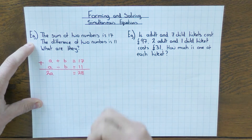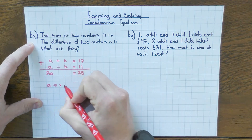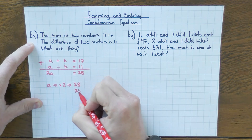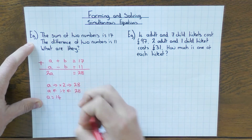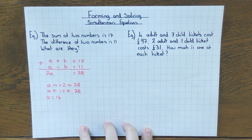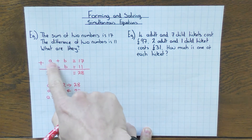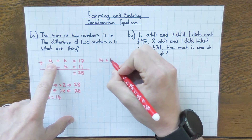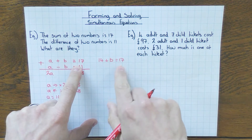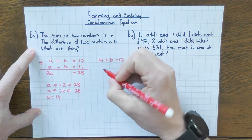This is where solving equations comes in handy — flowchart or balance method. I've got A, times it by 2, and I get 28. Go backwards: 28 divided by 2 gives me A, so the first number is 14. Once you know one variable, you put it back into either equation to work out the other. I'll pick the top one because it's positive. So 14 plus B equals 17, meaning B must be 3.